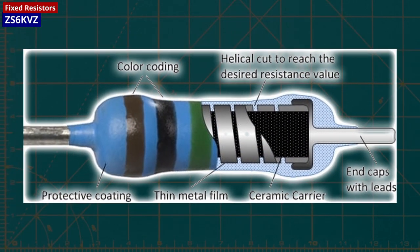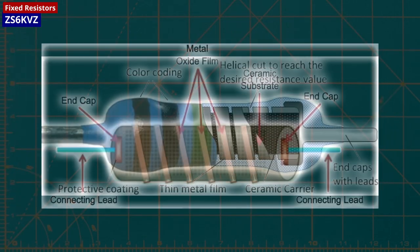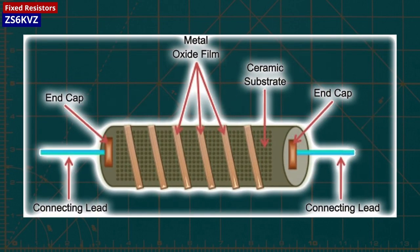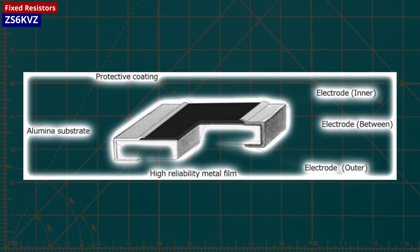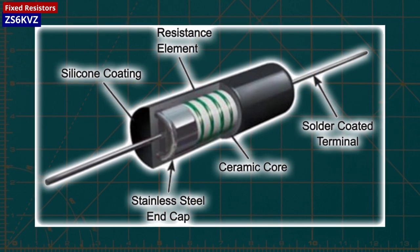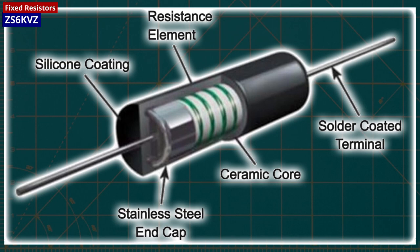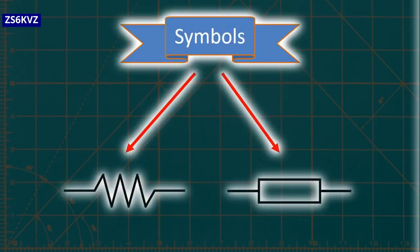The materials employed in fixed resistors vary, and their values can be either printed or identified by their color codes. Two circuit symbols are used for fixed resistors, and both of these symbols may be encountered.